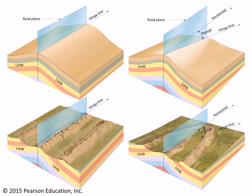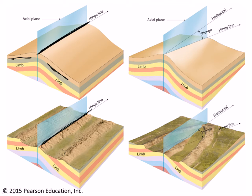Another thing that complicates folds is that their anatomy is sometimes in various arrangements. We can define the basic anatomy of a fold as having a hinge line — which represents the line of maximum curvature, or maximum flexure of the folded layers. On either side of that hinge line are the limbs of the fold. In this case we have an anticline, and the limbs dip away from one another. That hinge line could be parallel to Earth's surface, like a pencil lying on the surface of a desk.